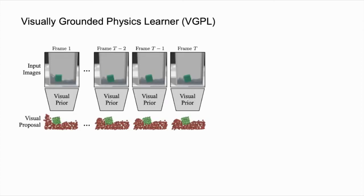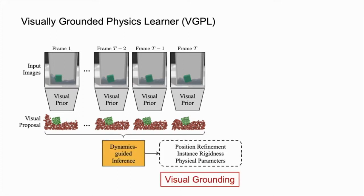The input frame first goes through the perception module, also known as the visual prior, which reconstructs the input scene in particle representation by giving a proposal on particle positions and instance segmentation. An inference module operates on those particles, predicting and refining estimates of particle locations and their physical parameters, subject to the constraints imposed by the dynamics prior, which we refer to as visual grounding.